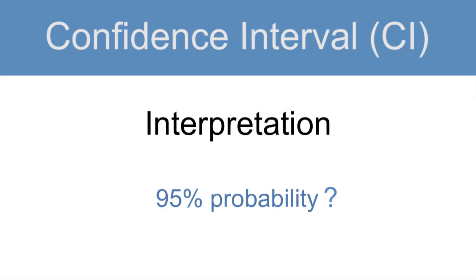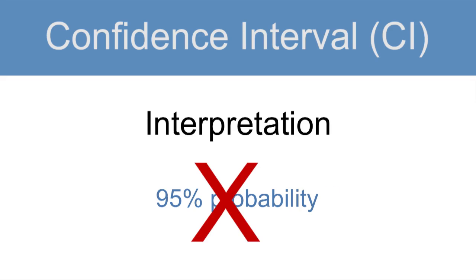A quick clarification on interpretation: when interpreting a 95% confidence interval, is it correct to say that there is a 95% probability that the true value lies within the interval? And the answer is no, that is not correct. A probability is relevant to a process, not a specific interval.